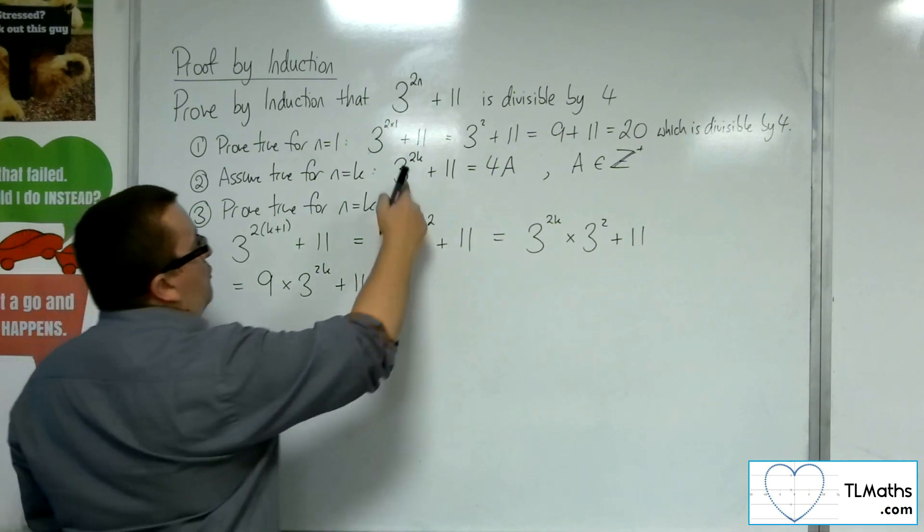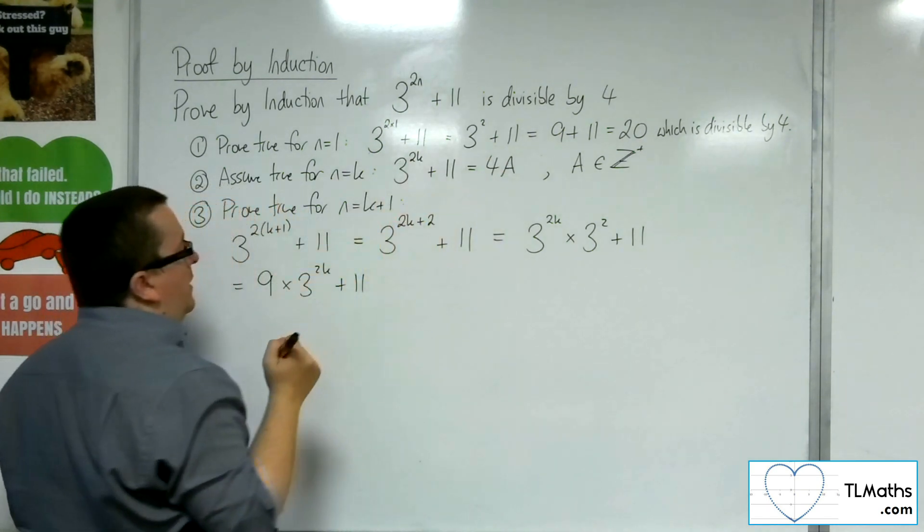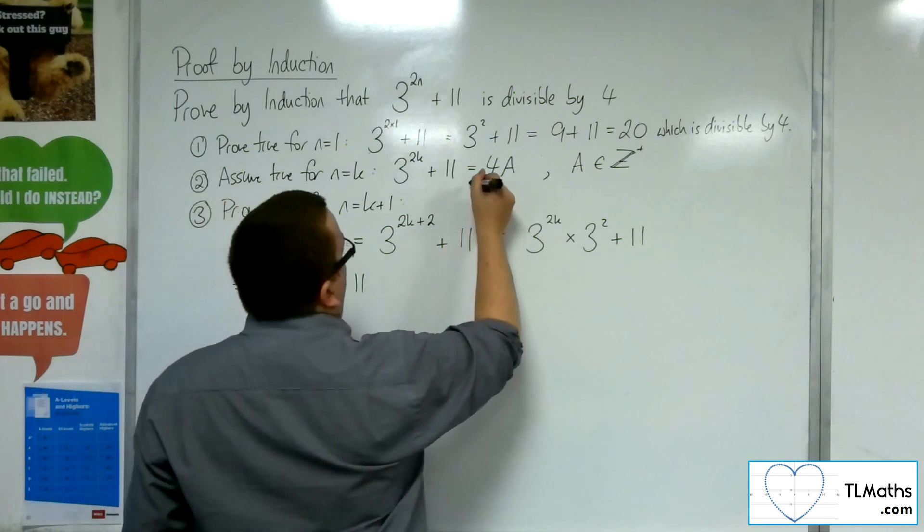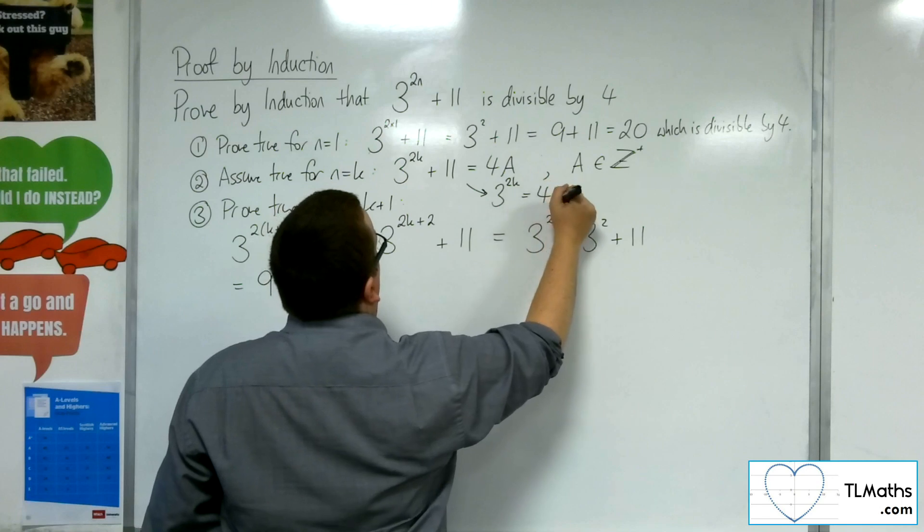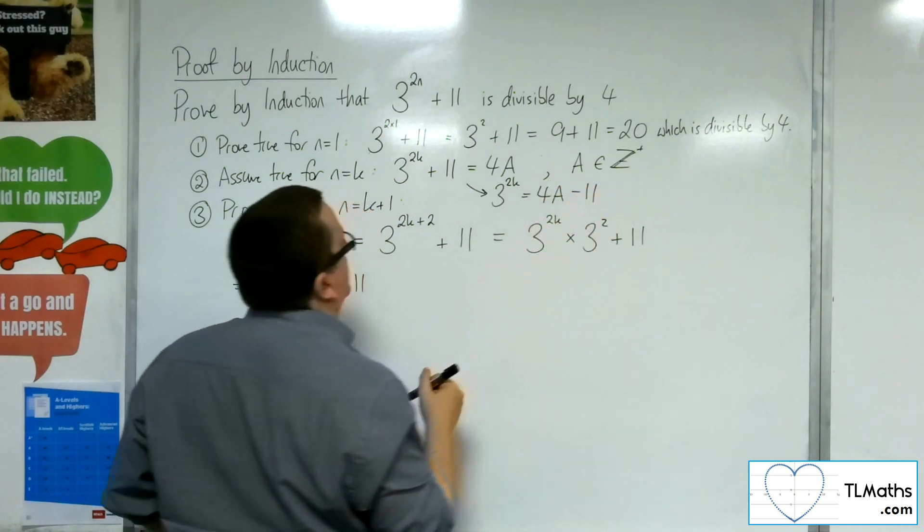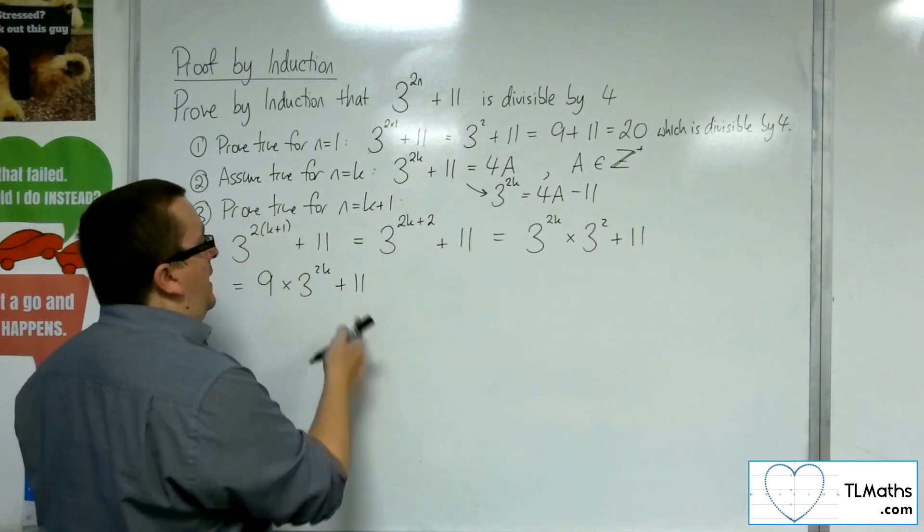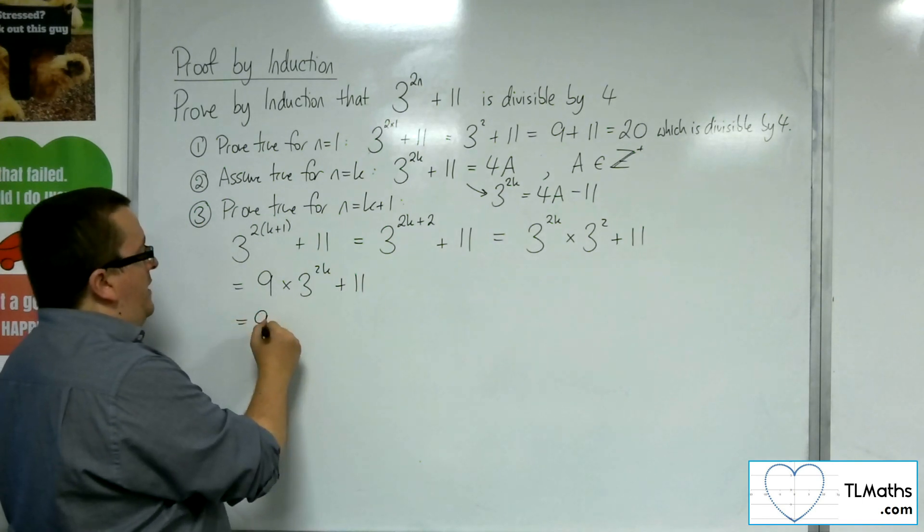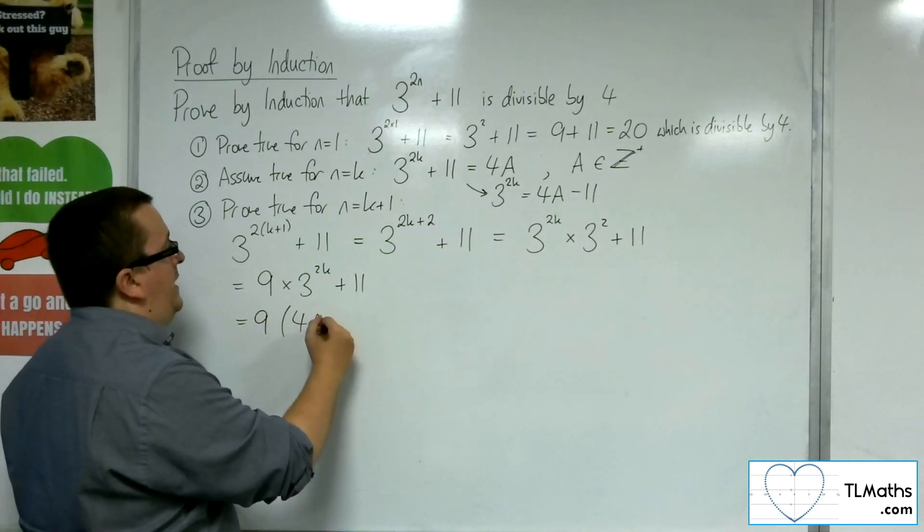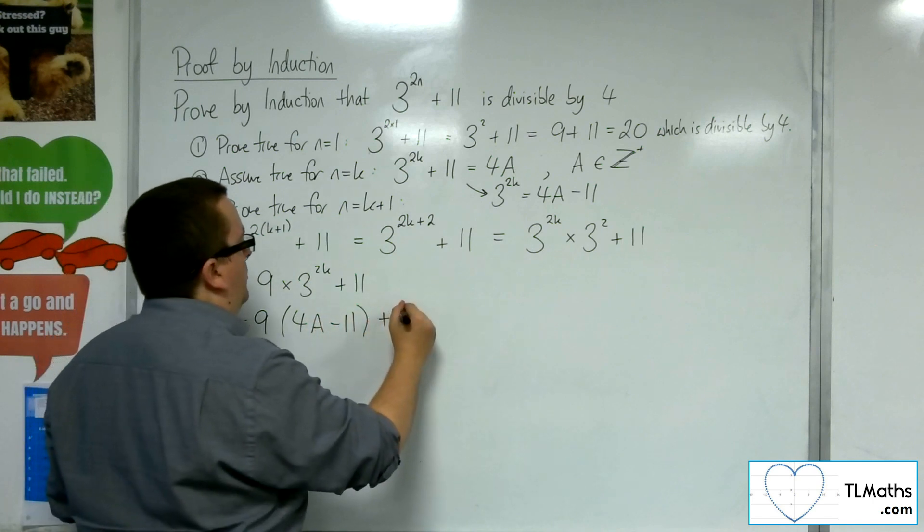Now, from our assumed statement here, I can rearrange that to get 3 to the 2k is equal to 4a minus 11. And I can substitute that into here.